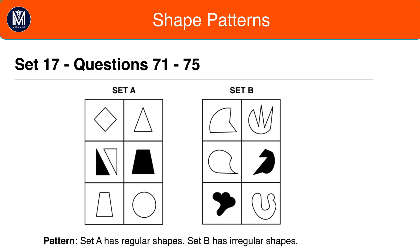The pattern here is that set A has regular shapes and set B has irregular shapes. It is unlikely to be a number pattern because there are one or two shapes per box across both sets. And it's not a colour pattern, as most boxes in both sets have just white shapes. Therefore, look closely at shape.